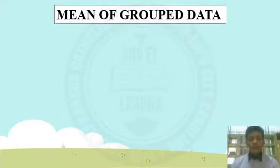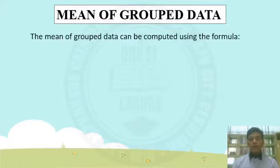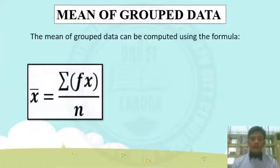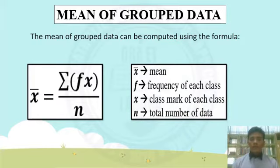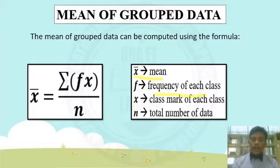We will discuss first the mean of grouped data. The mean of grouped data can be computed using the formula: the mean is equal to the summation of the frequency times x, over n. Where this symbol is called the mean, f is the frequency of each class, x is the class mark of each class, and n is the total number of data.